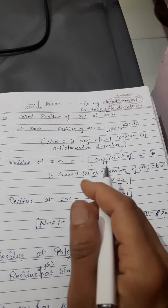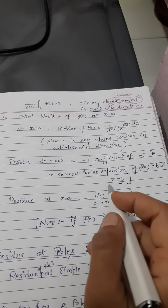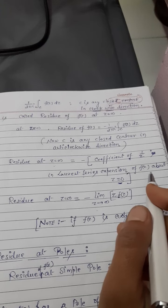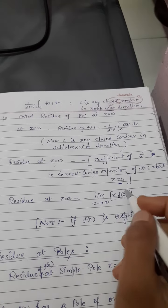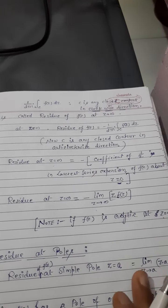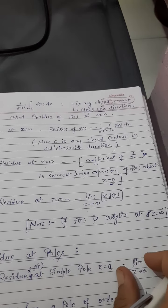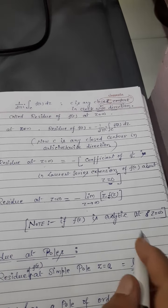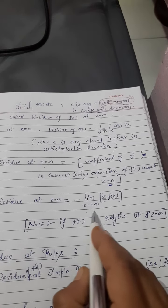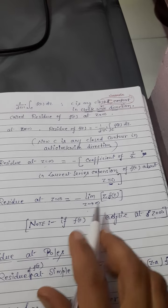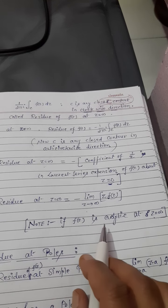Third method में z equal to infinite पर residue find out करना हो, then: limit as z tends to infinite of minus z into f(z). ठीक है — minus को बाहर ले लो। इस formula के according भी find out कर सकते हो, लेकिन इसमें condition क्या होनी चाहिए — कि function जो है, वो z equal to infinite पर analytic होना चाहिए। यदि z equal to infinite पर analytic है, तो ही इस formula को use करोगे। इससे examples करेंगे, तो उससे concept clear हो जाएगा।